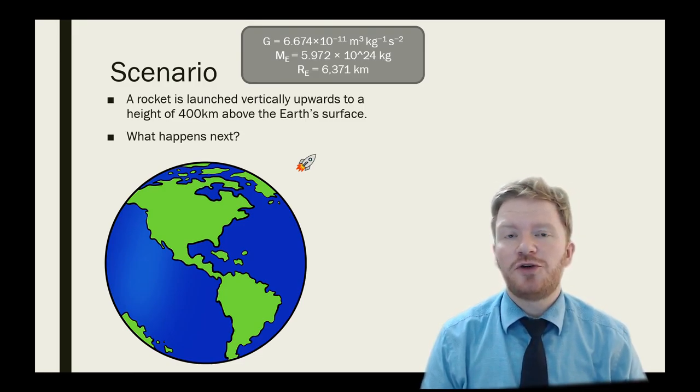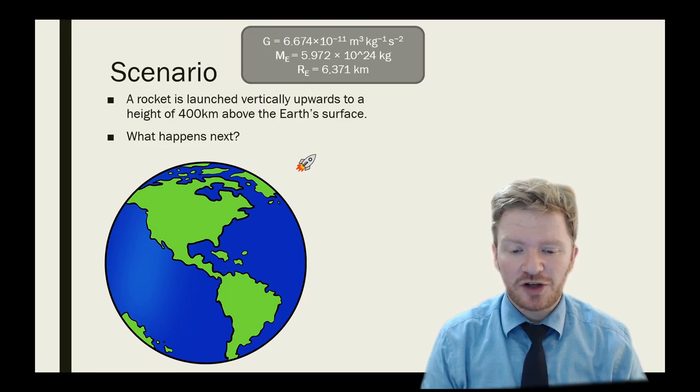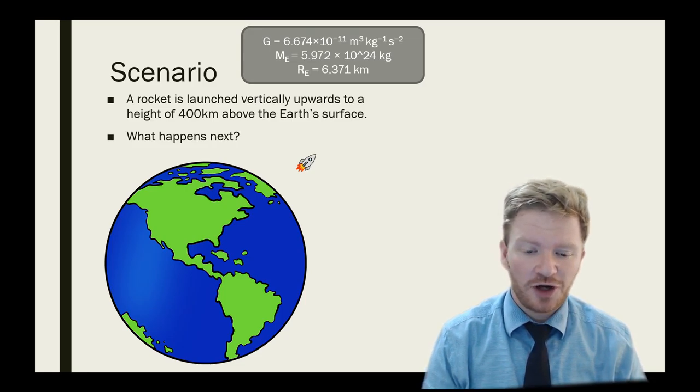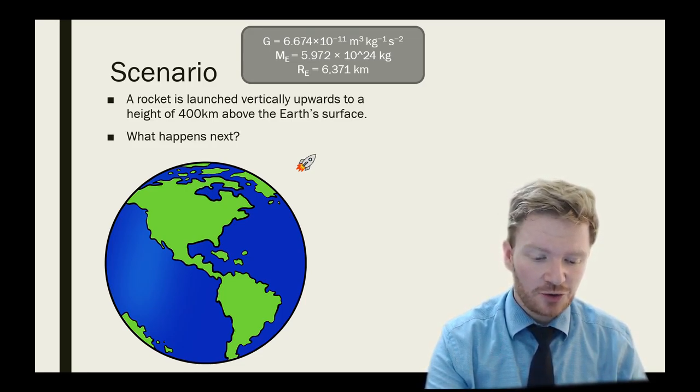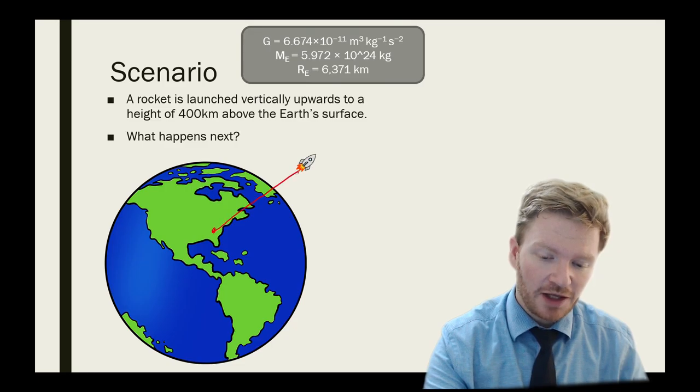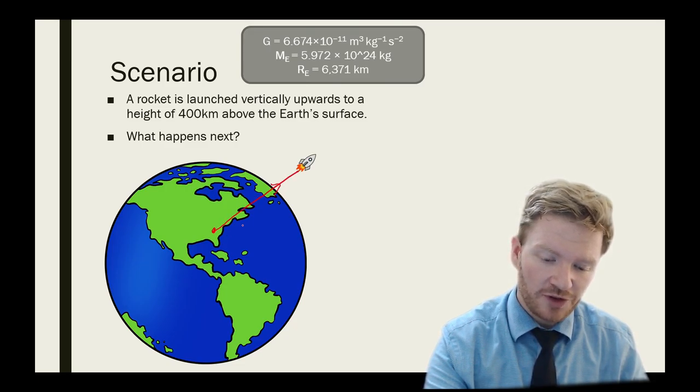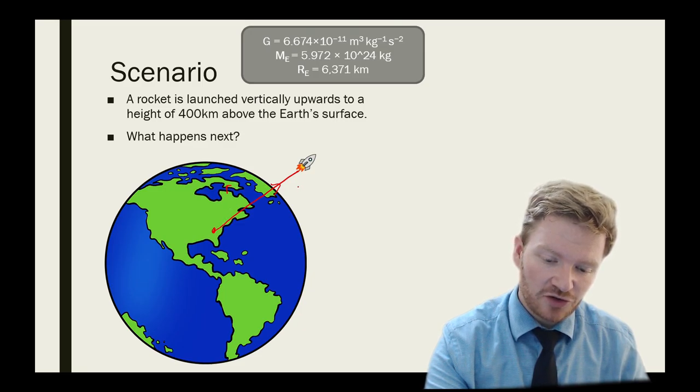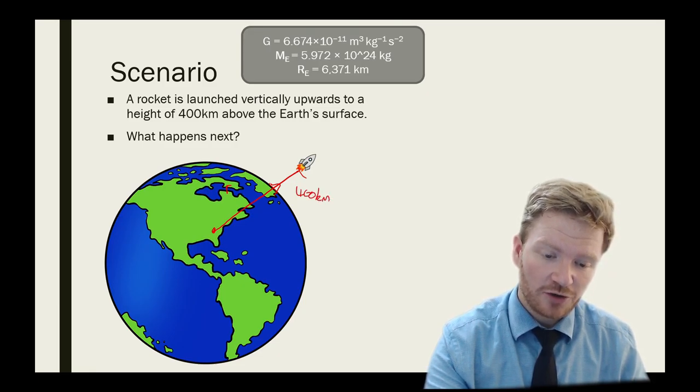So here's a scenario for you to think about. I want you to imagine that I launch a rocket vertically upwards to a height of 400 kilometres above the Earth's surface. So let's say I start from about here and I launch up to there. So that gives me a distance of 400 kilometres from the surface.